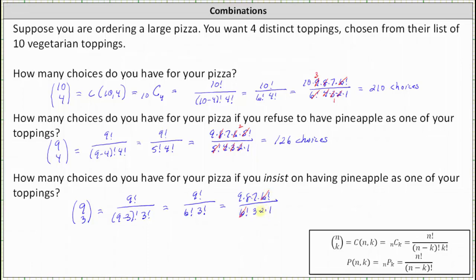8 and 2 share a common factor of 2: one 2 in 2 and four 2s in 8. Also, 9 and 3 share a common factor of 3: one 3 in 3 and three 3s in 9. We are left with 3 times 4 times 7, which equals 84. There are 84 choices if you insist on having pineapple as one of your toppings.